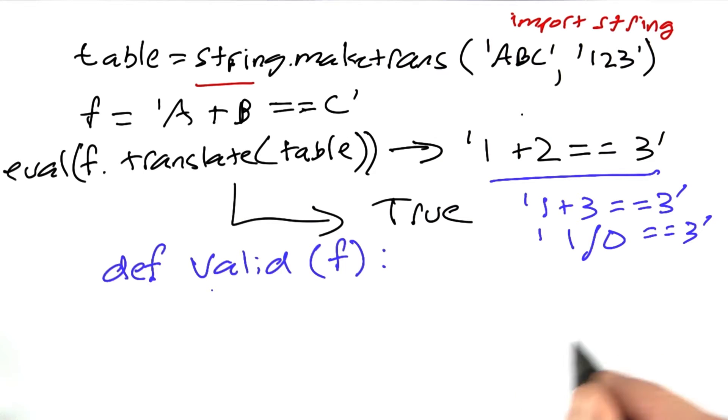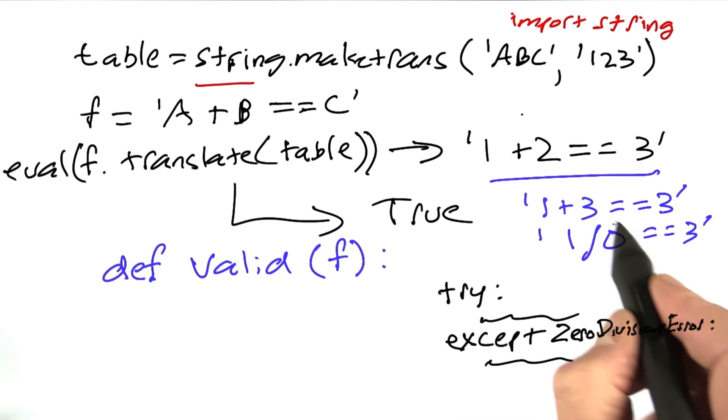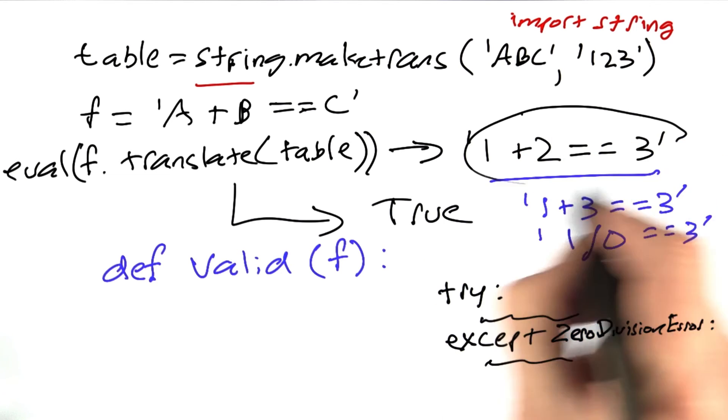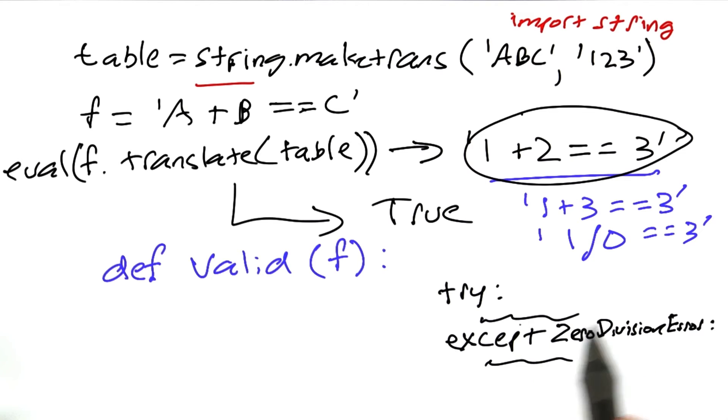And I'll give you a hint, which is you should consider using a try statement. So try do something, and then you can say except ZeroDivisionError. So what that does is it executes the main body in which you can test if evaluating this expression f is true or not, and return appropriately. But if evaluating the expression f causes a ZeroDivisionError, then this clause will catch it, and then you can do the appropriate thing here.